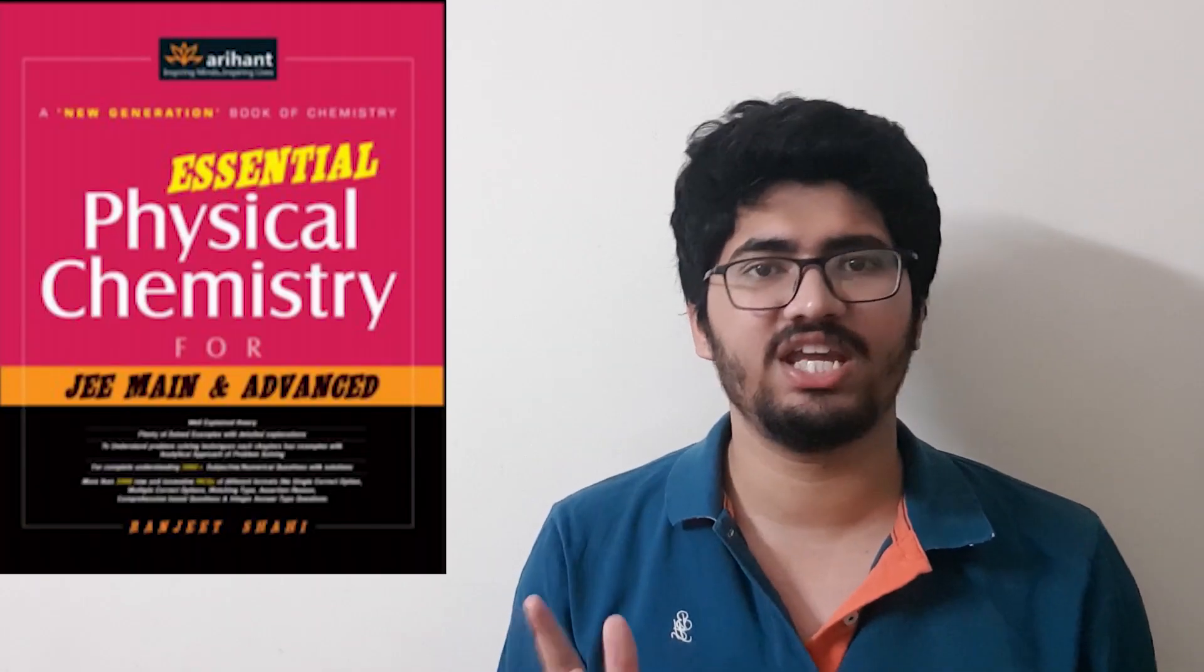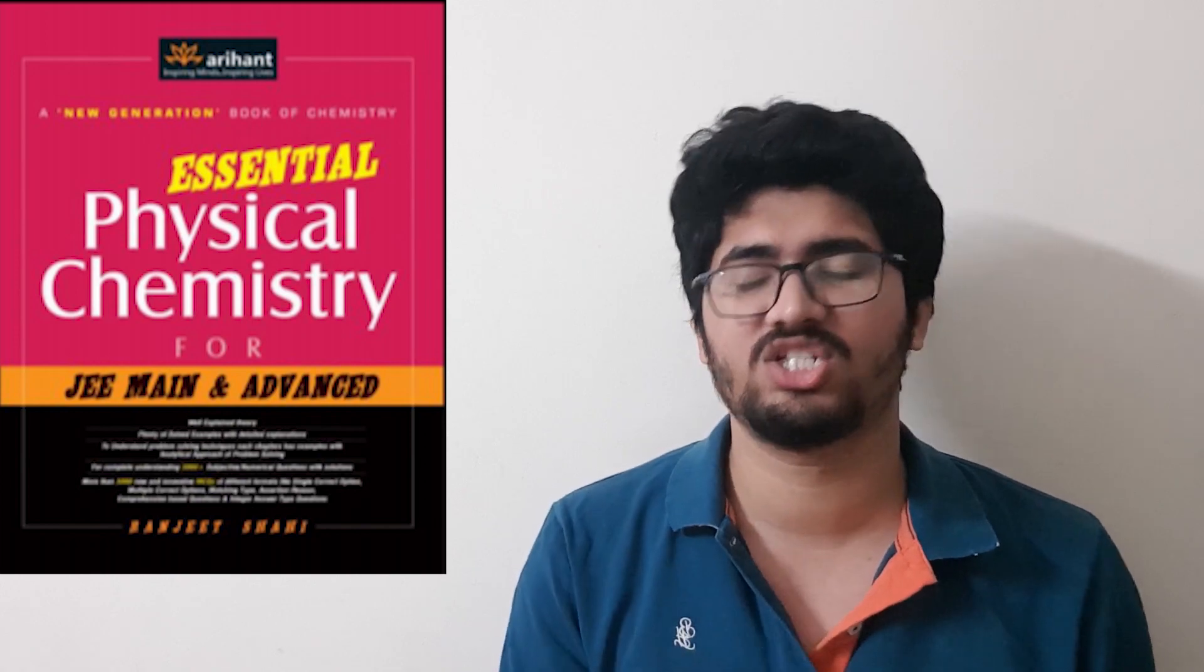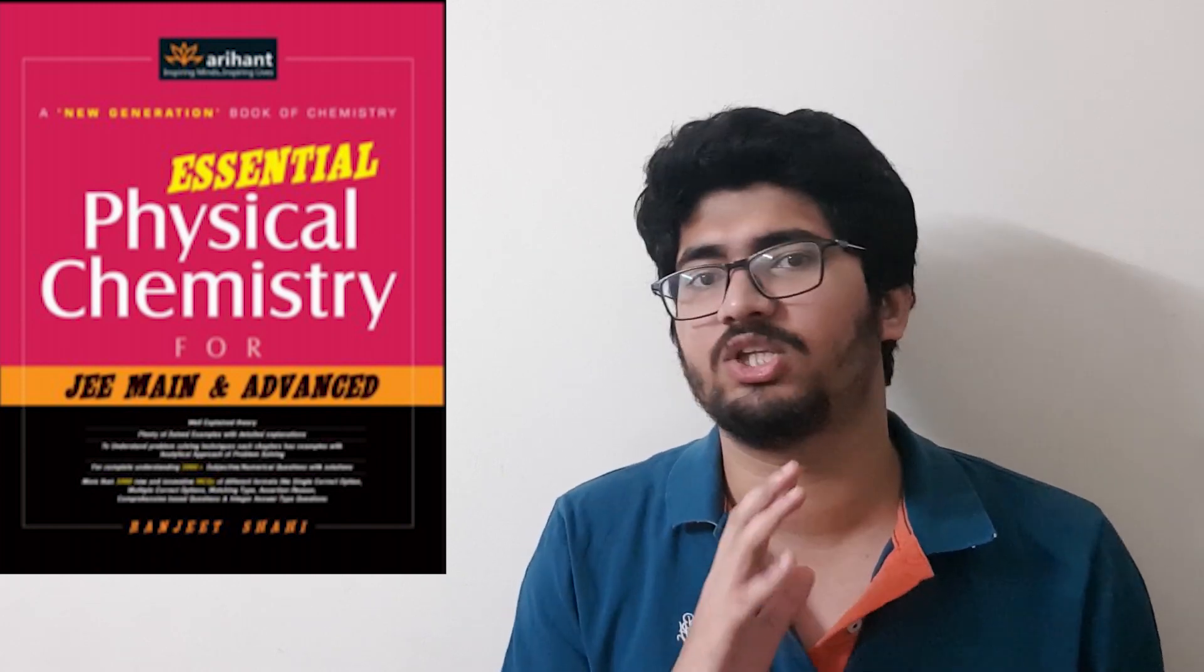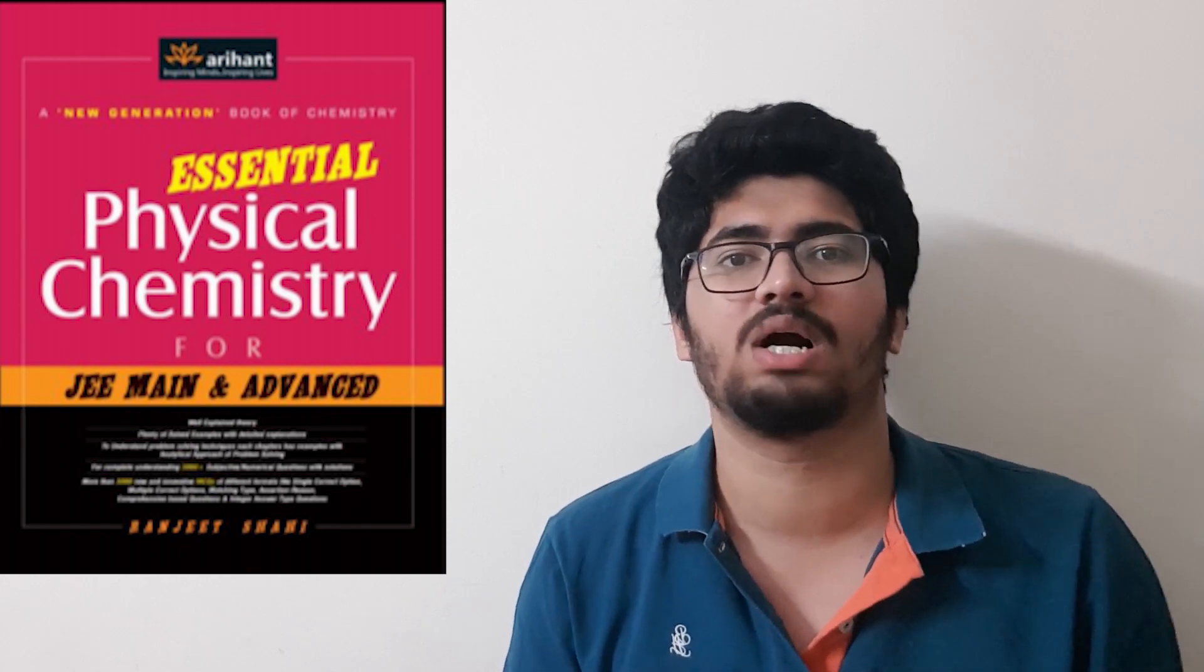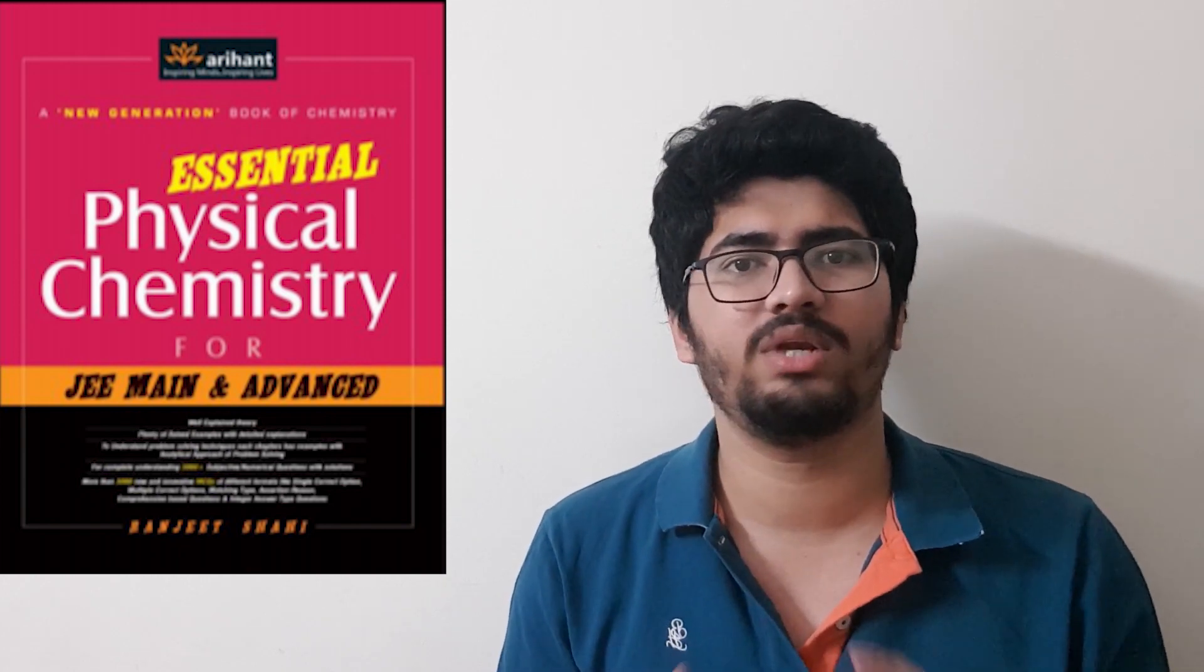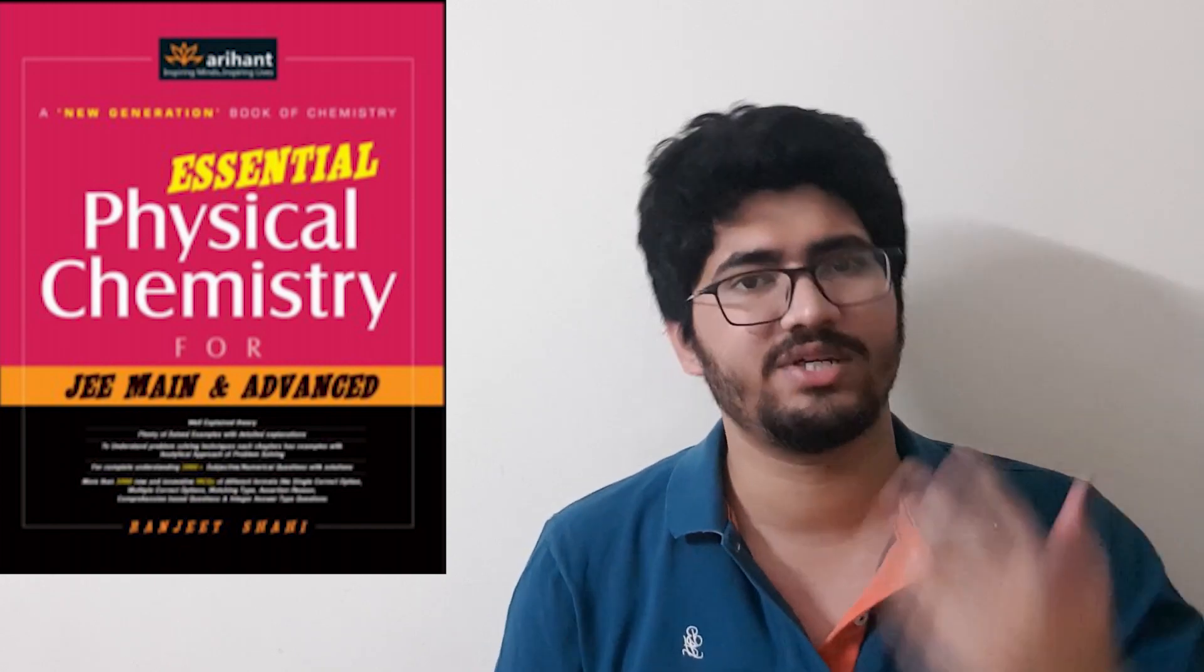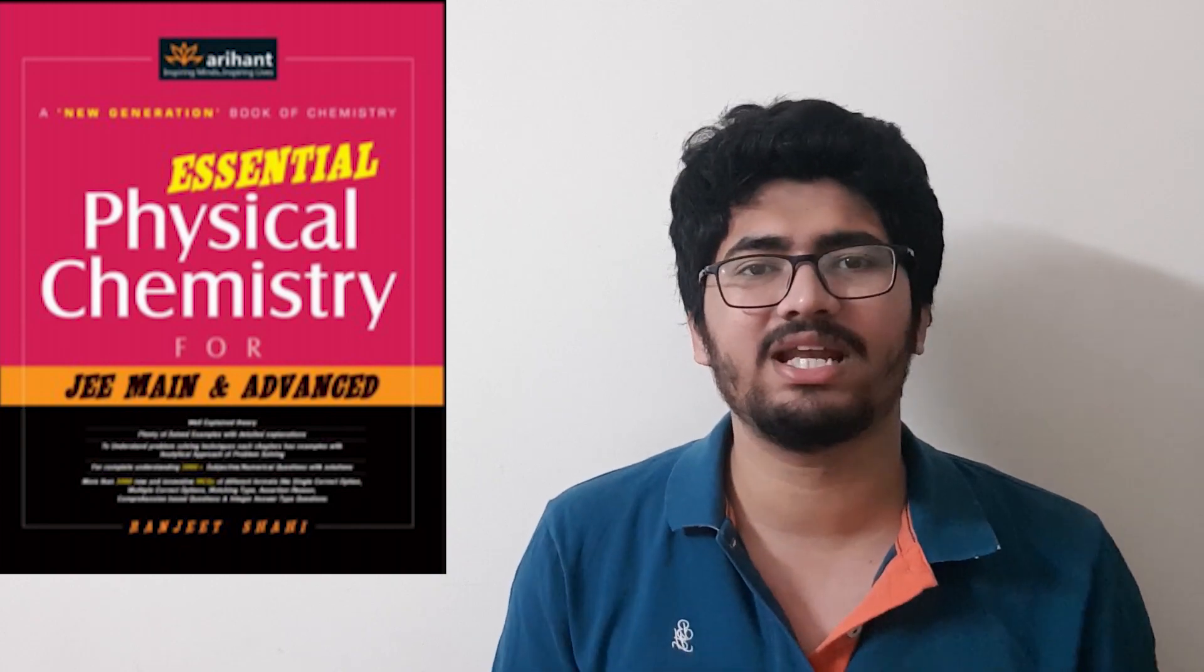One more book is Ranjit Shahi. Ranjit Shahi's physical chemistry - maybe you've heard of Arihant's Ranjit Shahi. I won't comment much on it because it's similar to OP Tandon. So if you want to do a lot of theory in physical chemistry, you can get a numerical grip. But the way we get that grip is through practice questions. Since our paper is objective type, we have to match that question pattern.